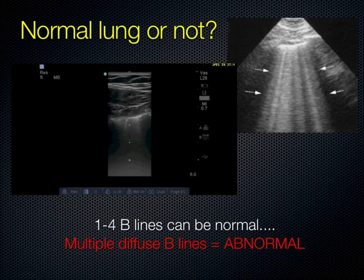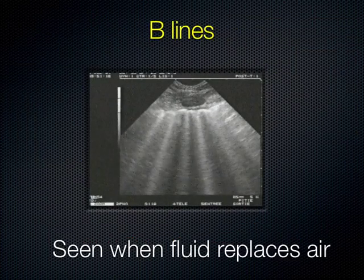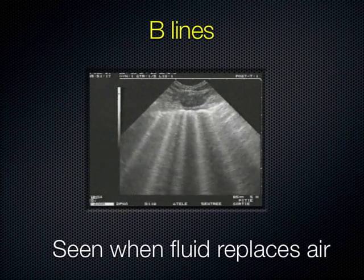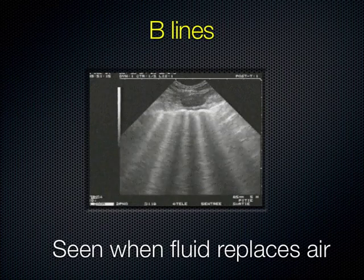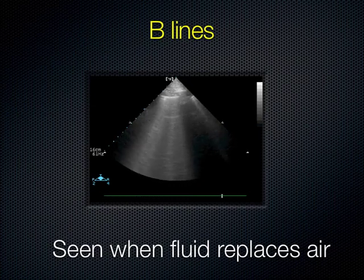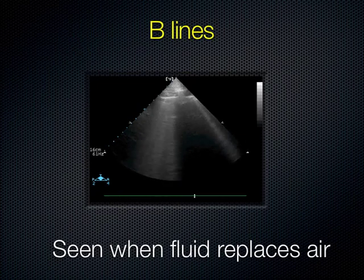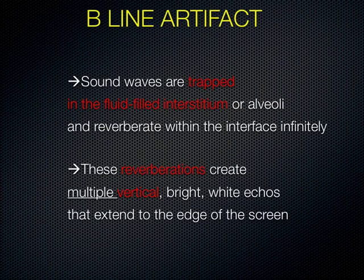The B lines occur because the sound waves get trapped in fluid in the interstitium — in the interlobular septae, which are about seven millimeters apart. When those get thickened with fluid, the sound waves get trapped at that interface and create a reverberation. The reverberation is vertical because those septae are vertical compared to the chest wall — they come all the way up to the chest wall perpendicularly. As the ultrasound beam reaches that interface and reverberates, it creates multiples of the reflection — a comet tail.